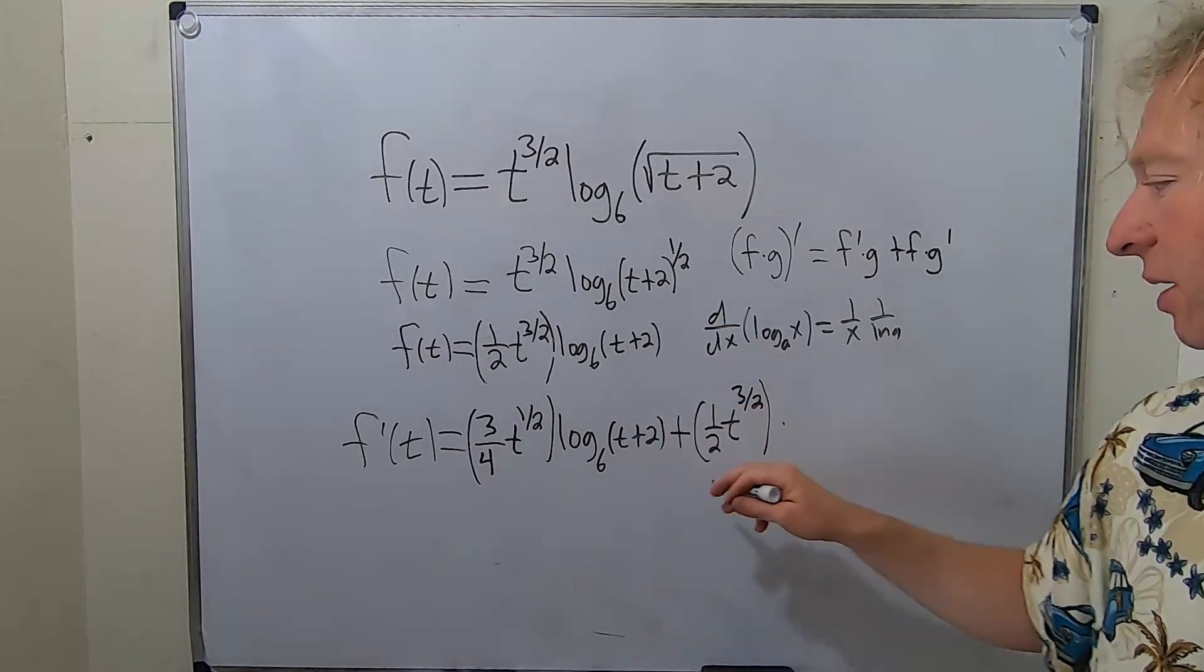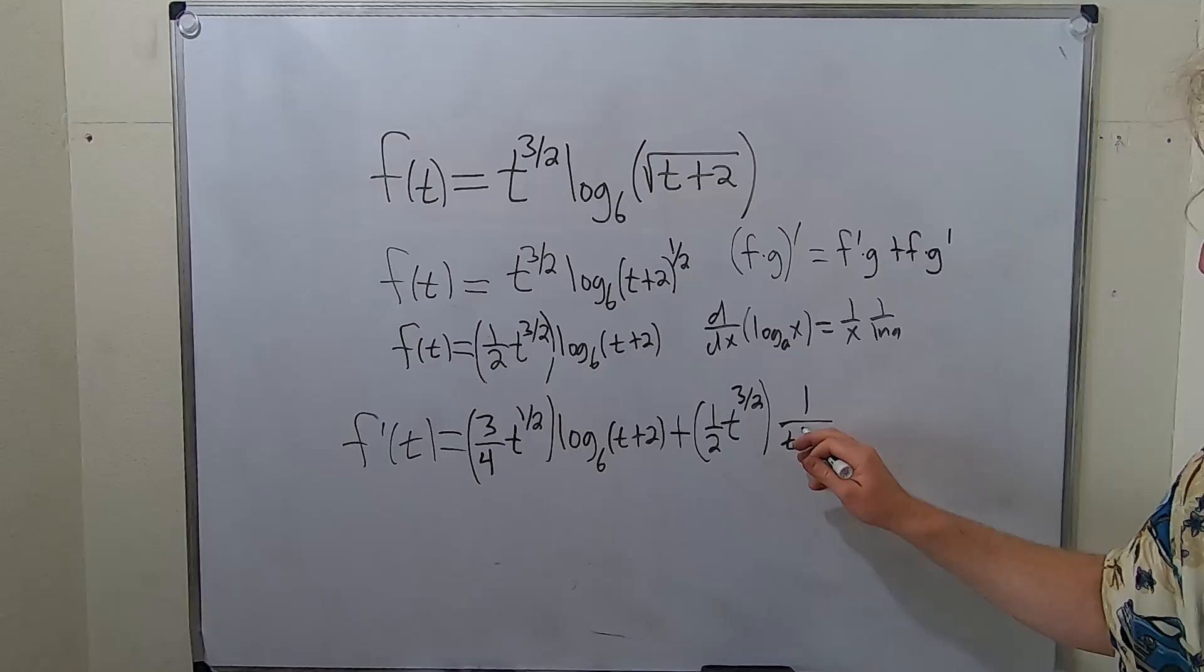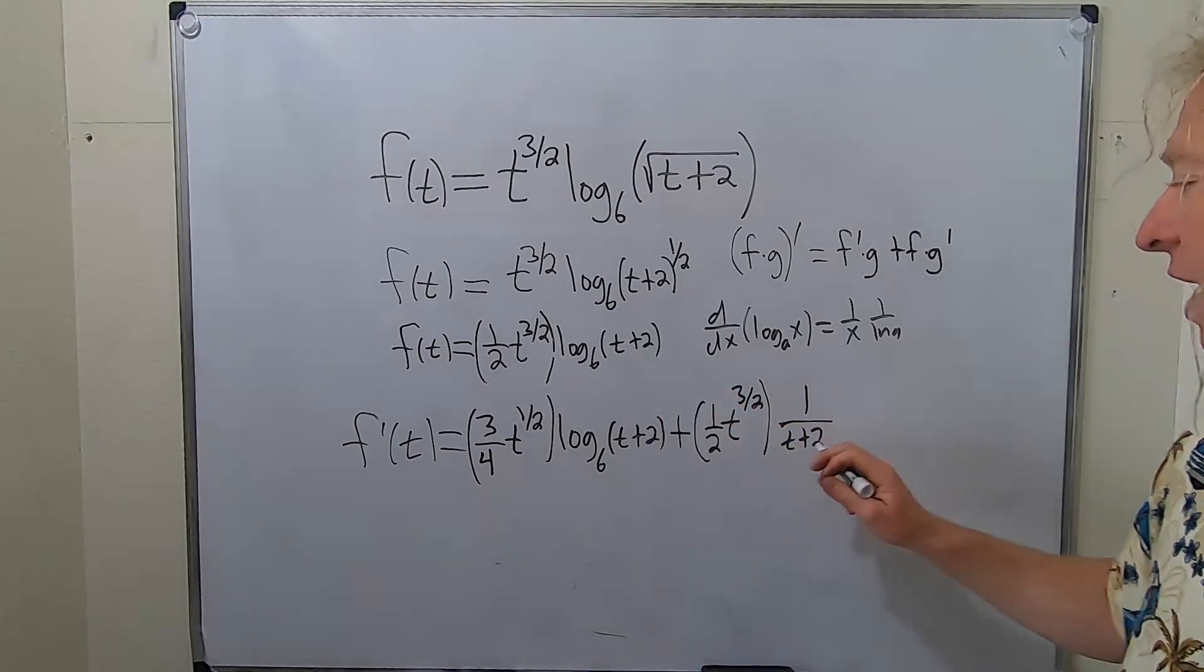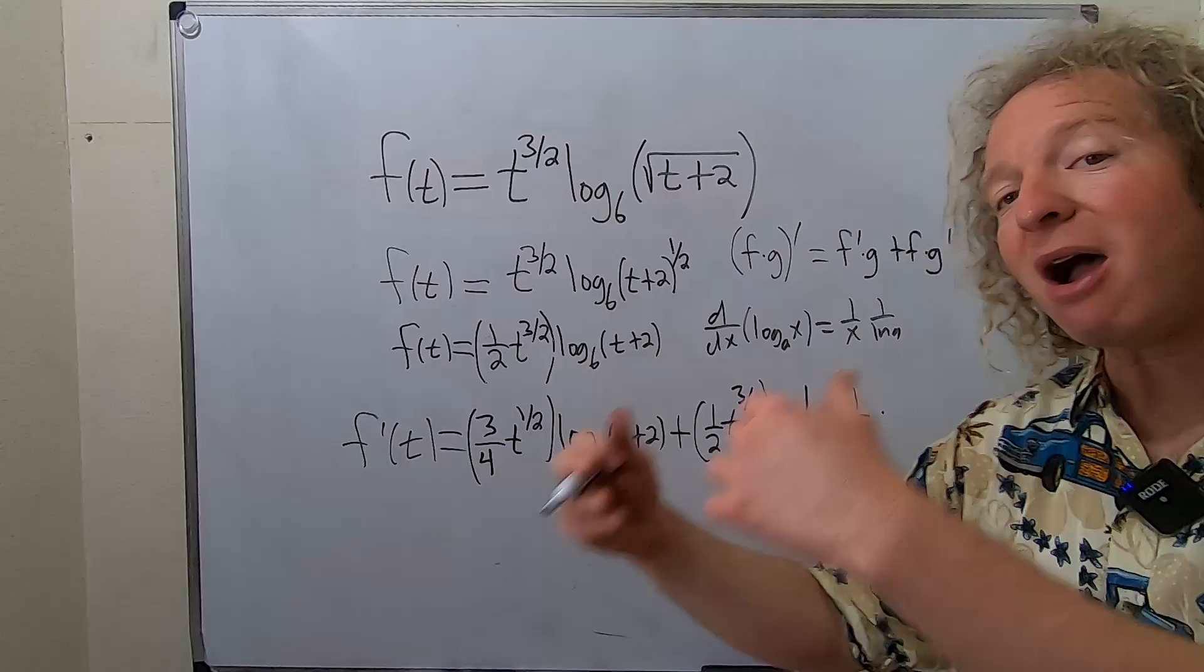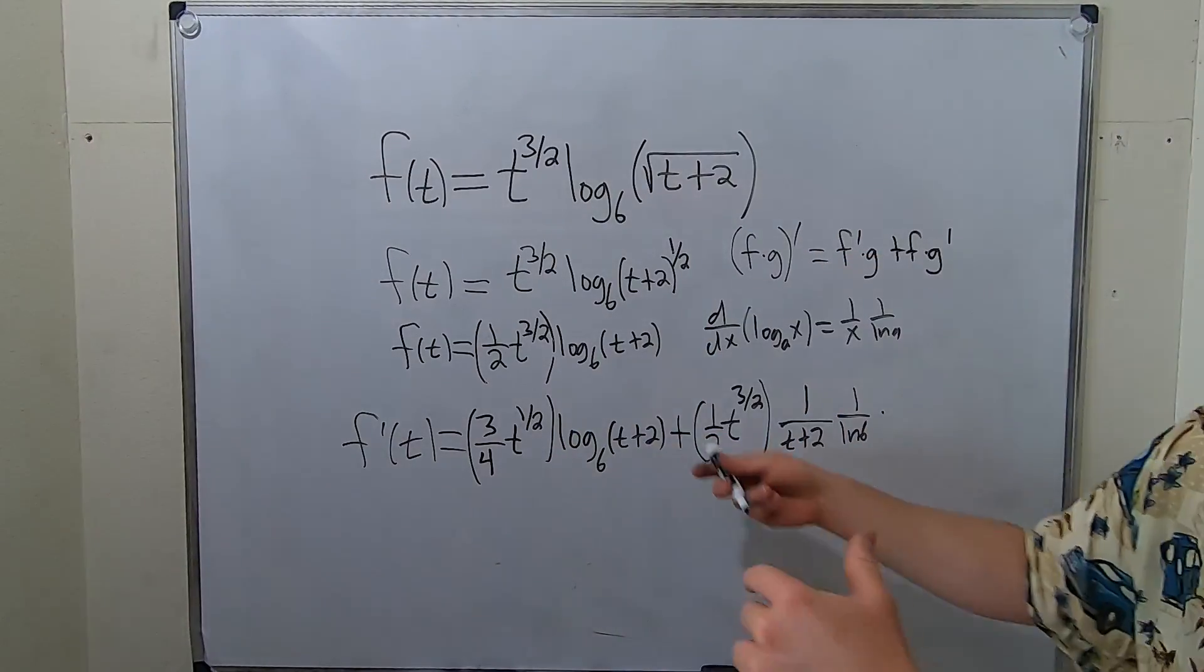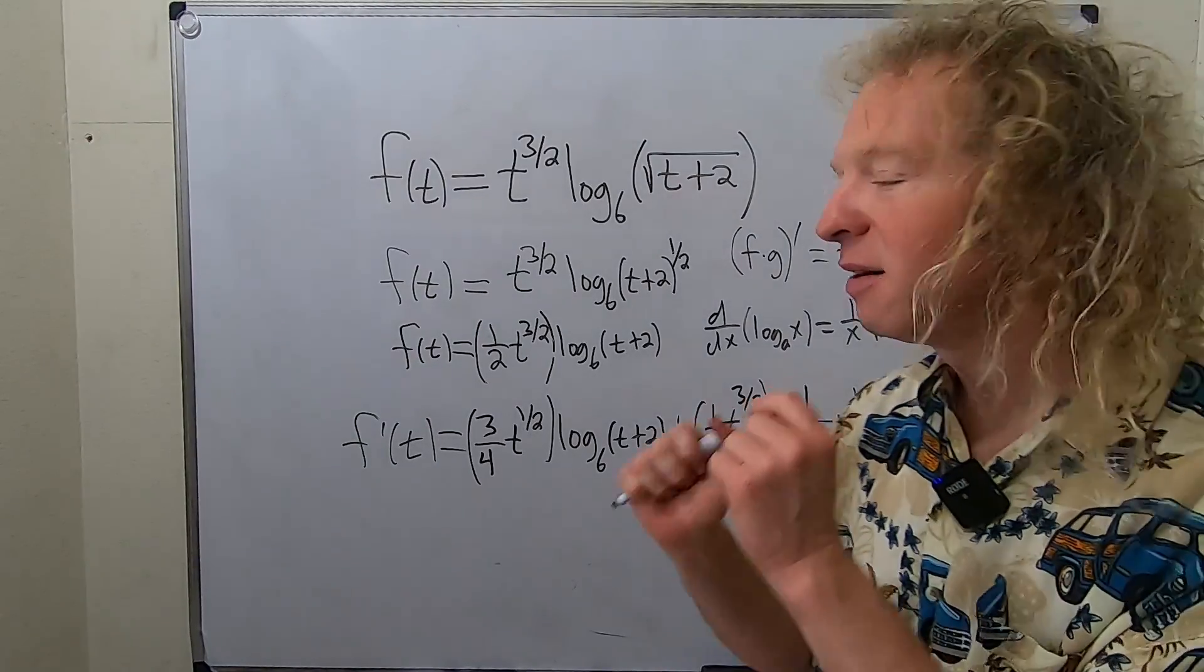So here it will be 1 over t plus 2. It's 1 over whatever is here. And then 1 over ln 6 times, now you multiply by the derivative of the inside. The derivative of t plus 2 is 1. Beautiful. We're pretty much done. I just have to erase the 1 and call it a day. But let's go over it again.